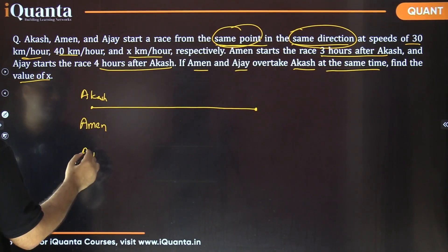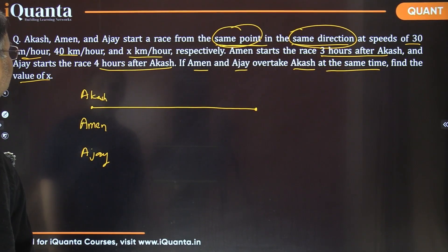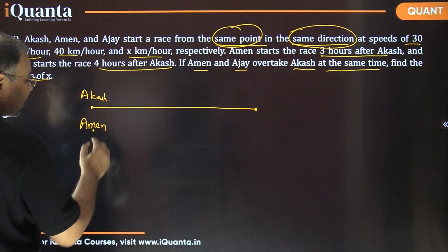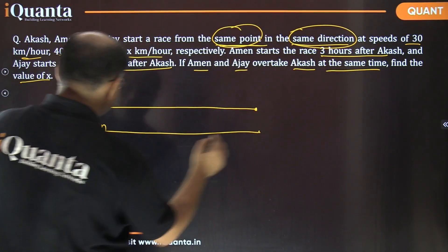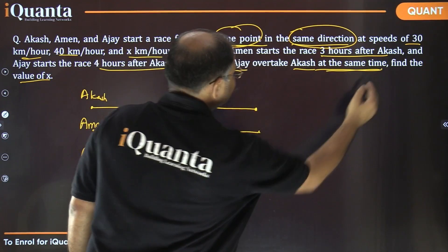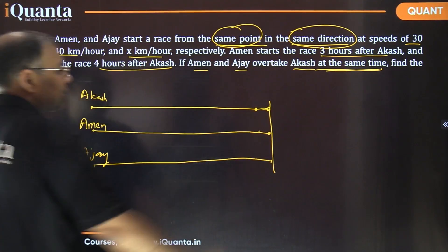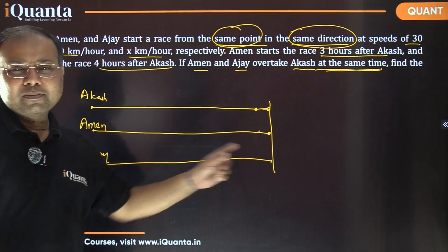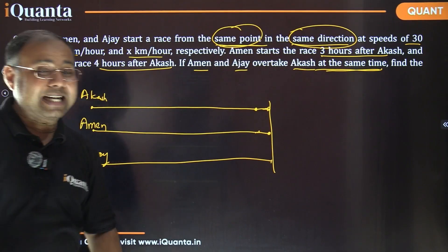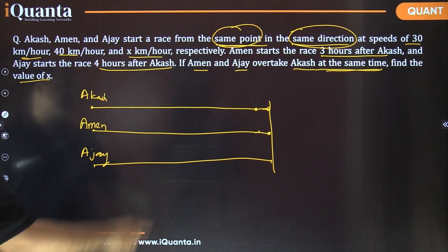Ajay started the latest — four hours after Akash. But both Aman and Ajay overtake Akash at the same time. This means at the same moment when Akash is at a certain point, both Aman and Ajay are also at that same point. So all three have traveled equal distance. They travel at constant speeds but the time taken is different.